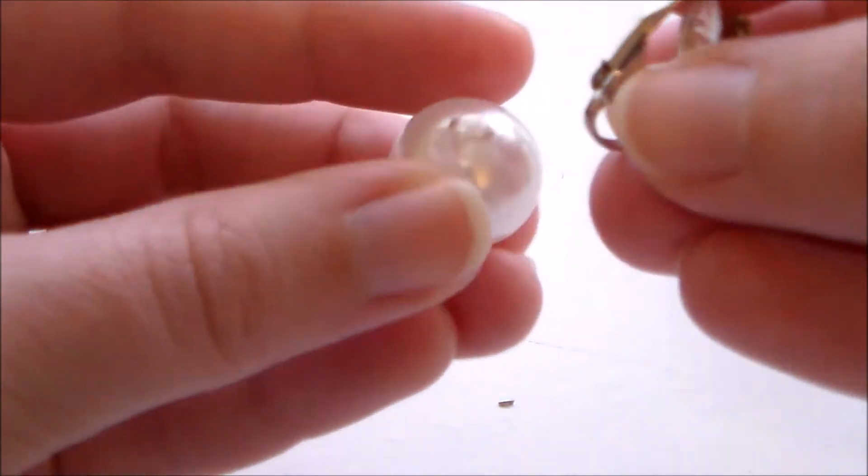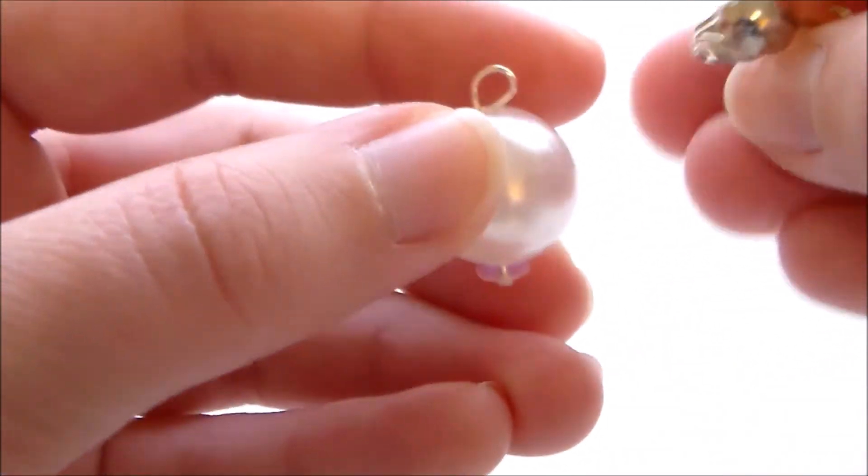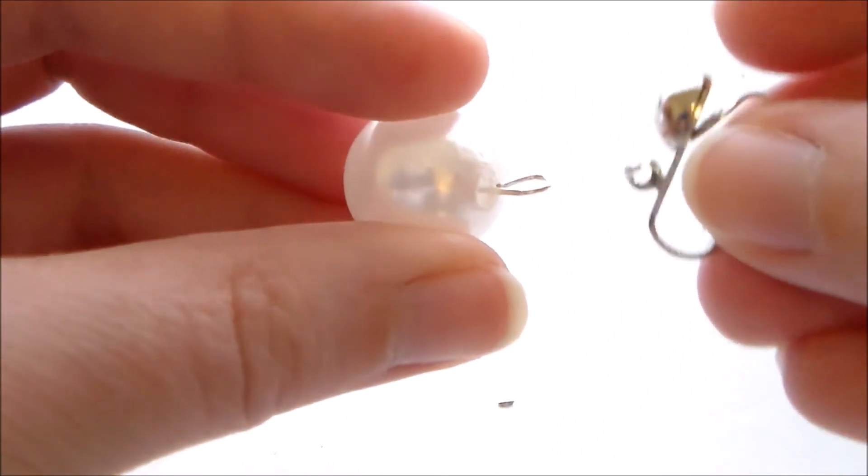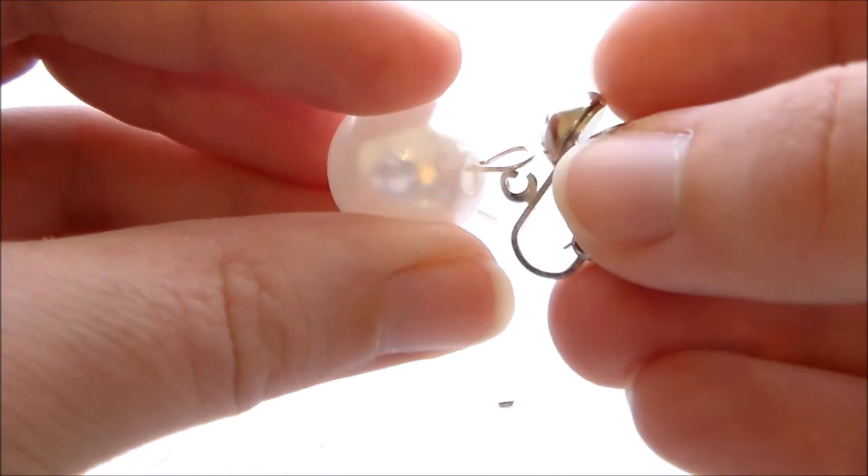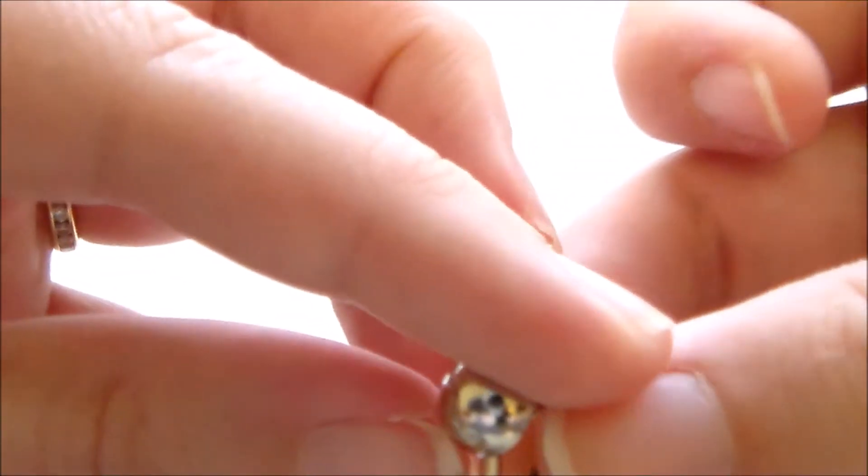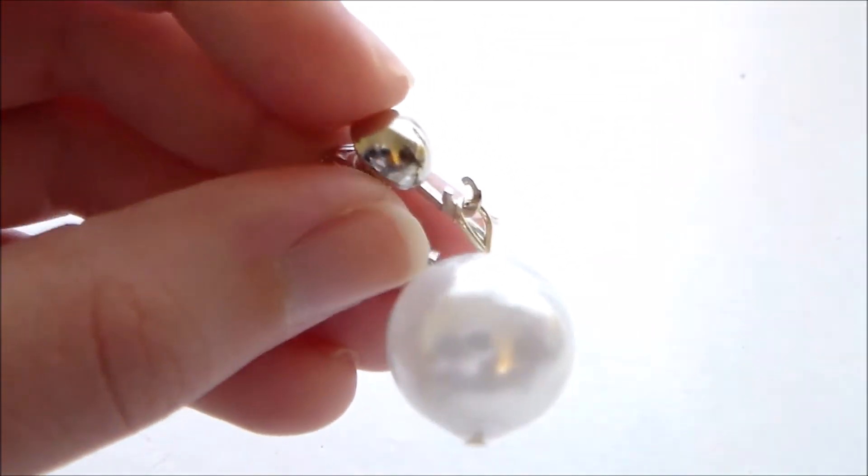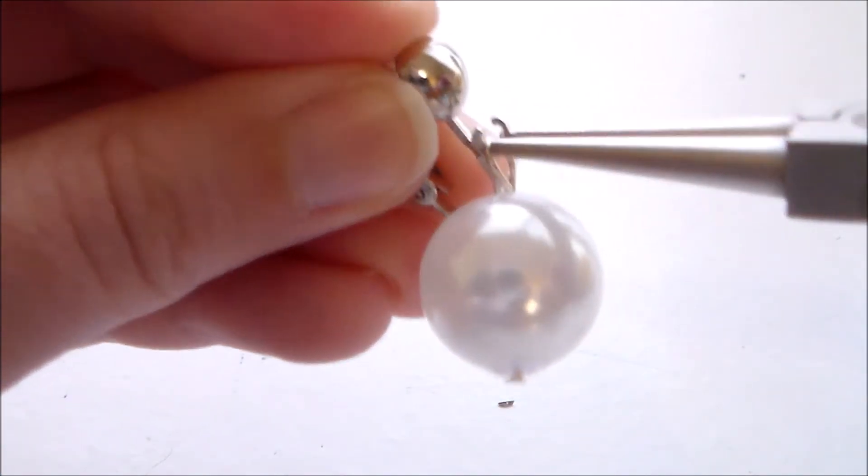If you have pierced ears, you could use an earring hook on here, but my ears are not pierced, so I'm going to be using a clip-on base, and just put the charm onto the base and bend it closed.